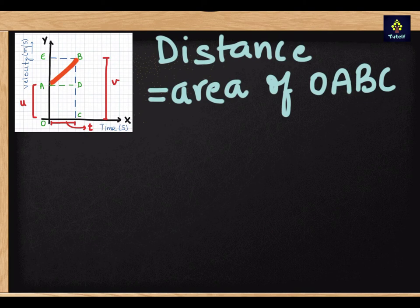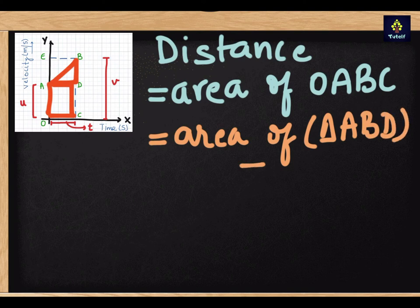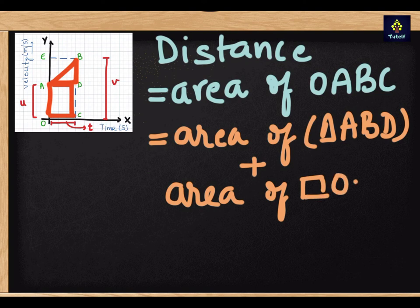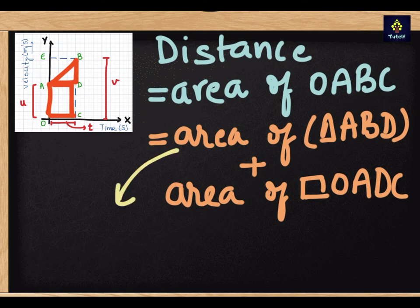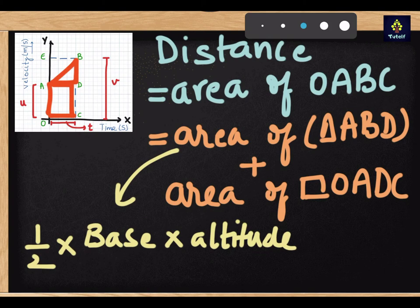Now OABC is actually this triangle plus this rectangle. That means it is the area of triangle ABD plus area of the rectangle OADC. Area of a rectangle is length times breadth.